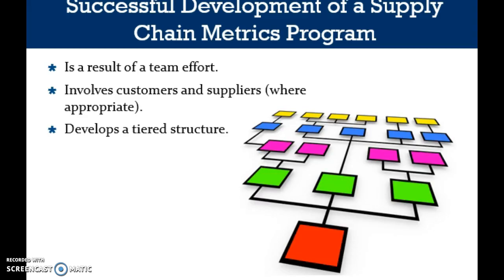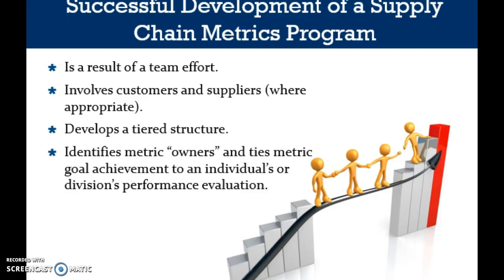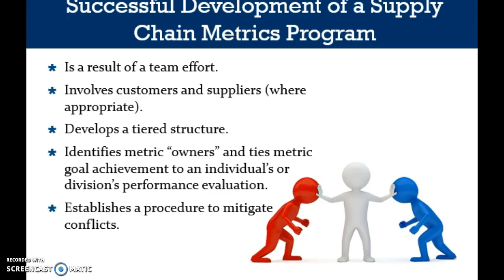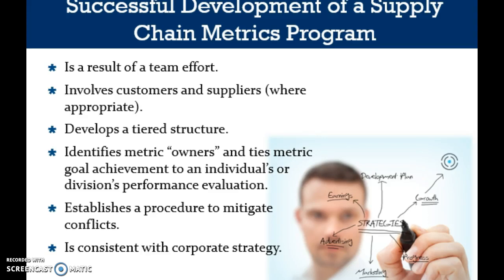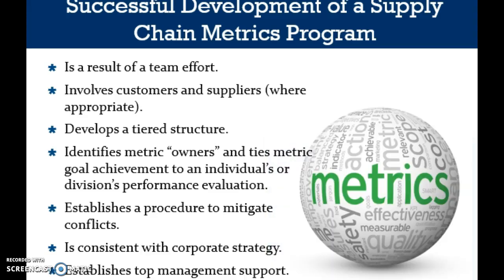Third, develop a tiered structure for the metrics. Fourth, identify metric owners and tie metric goal achievement to an individual's or division's performance evaluation — that provides the motivation to achieve metric goals and to use metrics to manage their business. Fifth, establish a procedure to mitigate conflicts arising from metric development and implementation. Sixth, the supply chain metrics must be consistent with corporate strategy. And finally, establish top management support for the development of a supply chain metrics program.